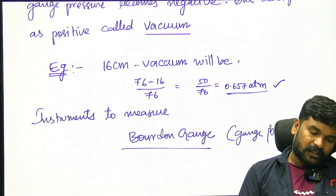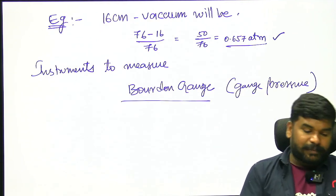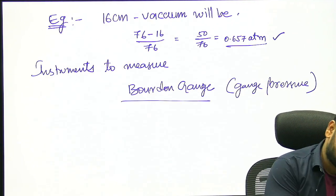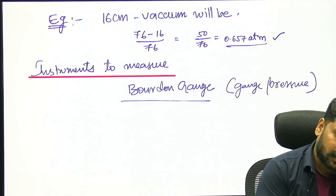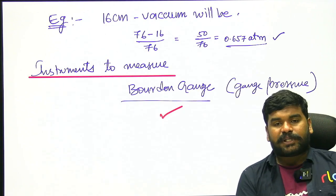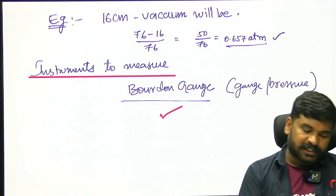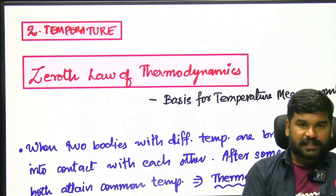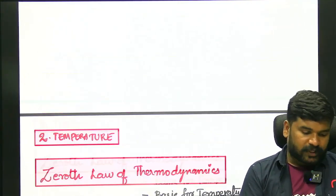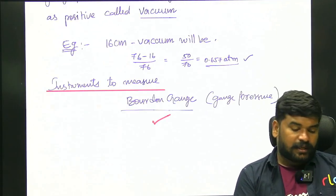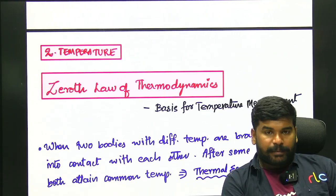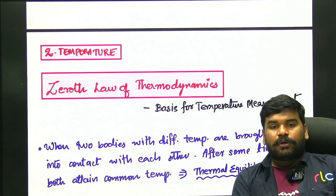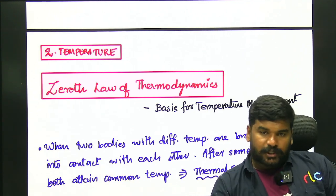So pressure measurement — a popular instrument is used to measure gauge pressure. It is used to measure the gauge pressure. So in the next lecture, we will discuss the zeroth law of thermodynamics. Thank you for watching.